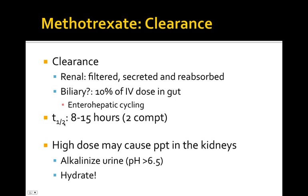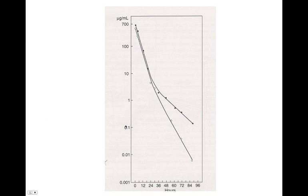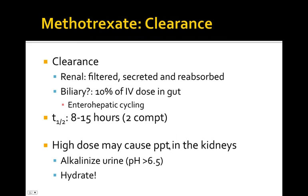The half-life of methotrexate is about 8 to 15 hours. We've already mentioned there are two compartments, and the half-life should be based upon the second compartment. Rounding to 10 hours: 10 times 5 is about 50 hours — a little over two days. If we use 12 hours, that's about two and a half days. So we're somewhere between two and two and a half days to reach steady state, unless we have renal impairment.